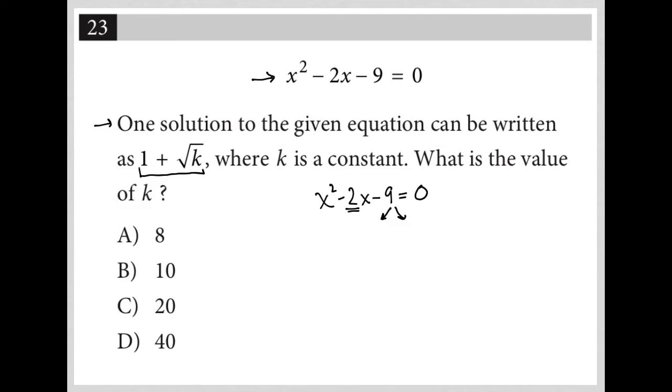Negative 9 can be obtained by multiplying 3 times -3, but that would not add up to -2. I could also get -9 by multiplying -1 times 9, but that would also not give me -2. And 9 times -1 would also not give me -2.